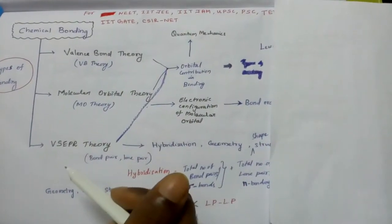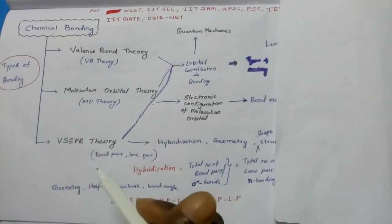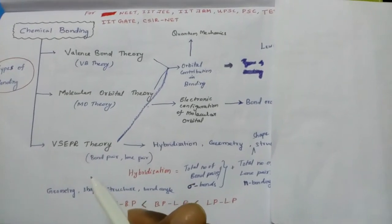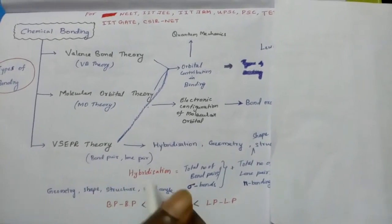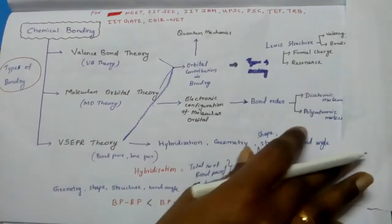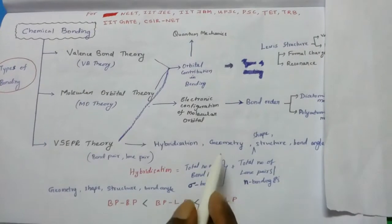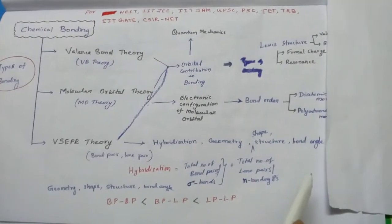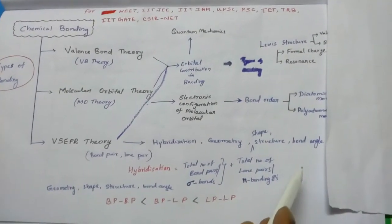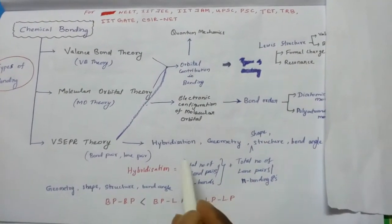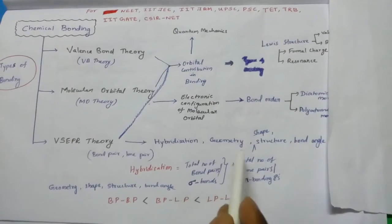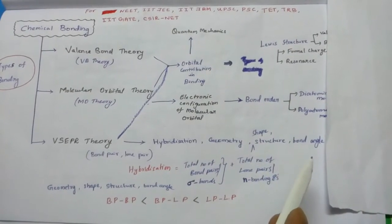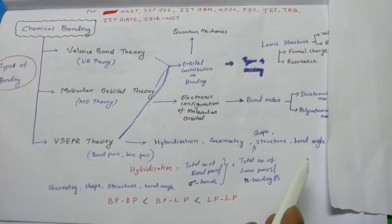VSEPR theory, or valence shell electron pair repulsion theory, is used to find hybridization, geometry, shape, structure, and bond angle of molecules.